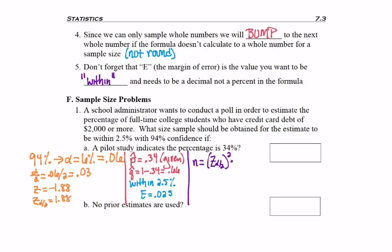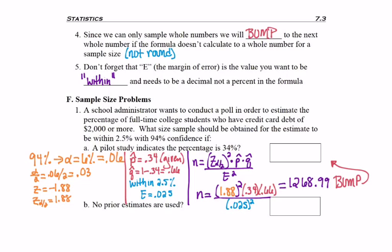So I determine the formula I want to use, which is the one that has p hat and q hat. I plug all the numbers in according to what I found so far. Enter it into my calculator, and I suggest you do this too so you know how it works on your calculator. You should be getting 1,268.99. As always, we're going to bump that to the nearest whole number of 1,269.